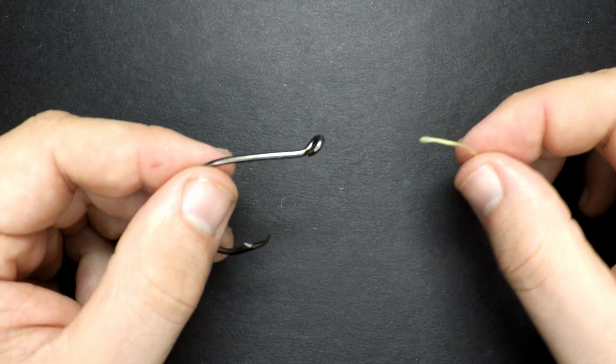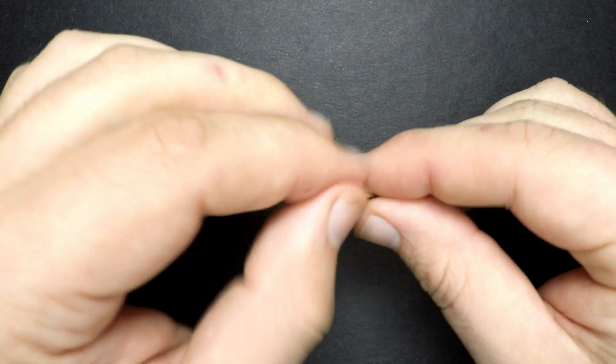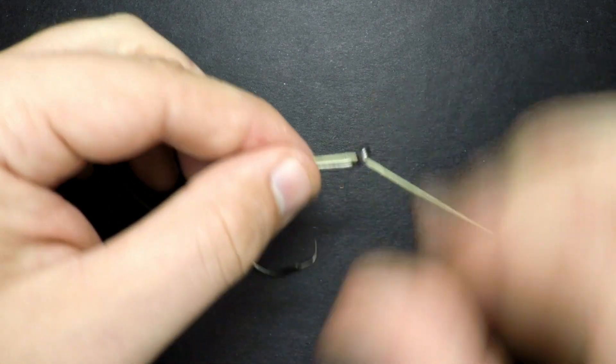Hey guys, I'm going to show you how to tie the uni snell knot. To start, thread your line through the eye of the hook and bring a good amount of line through.